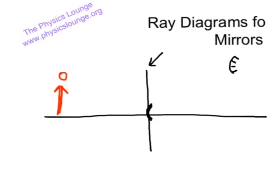So we have an arrow for an object, we're going to aim for an arrow for our image, and we're going to take two light rays that come out from the tip of the object, and we're going to see where they reflect and use the reflected rays to find where the image is.